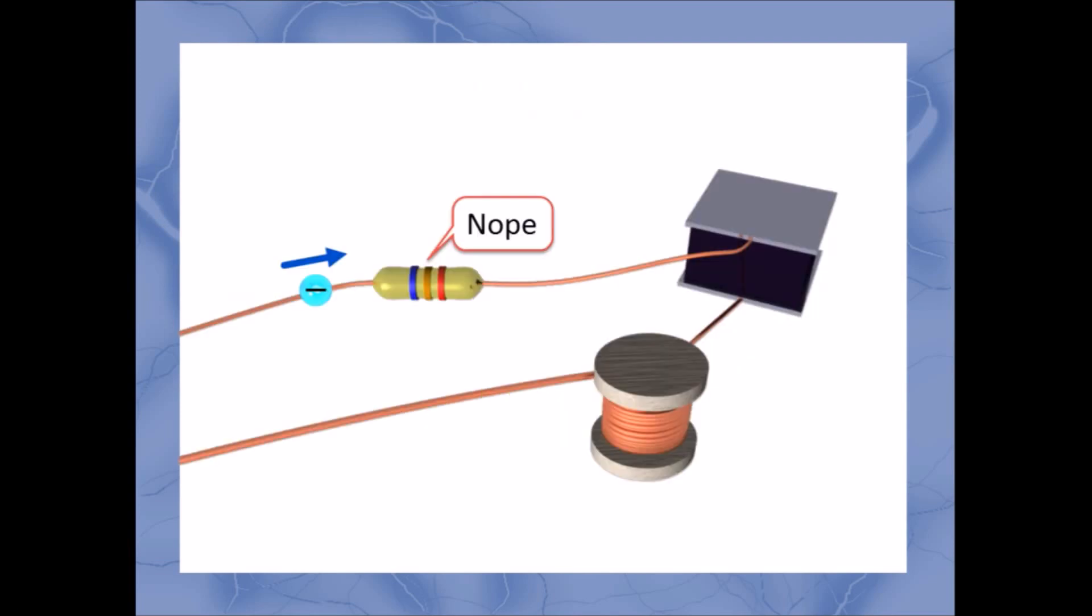Current flows into the resistor. The resistor says, not so fast there, and it acts a bit like a toll booth. Then current tries to go through the capacitor, but the capacitor says, no, you ain't going nowhere, and it starts to charge up.